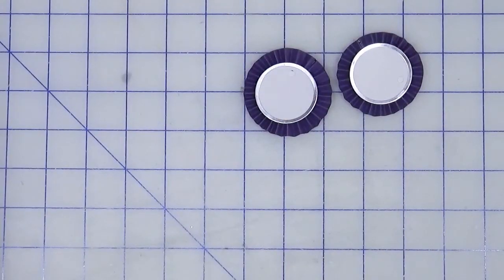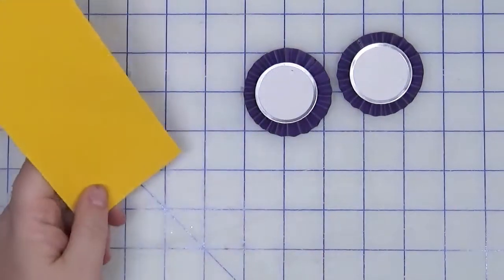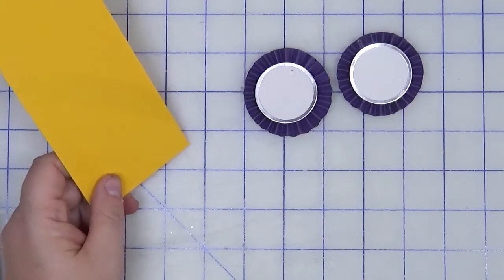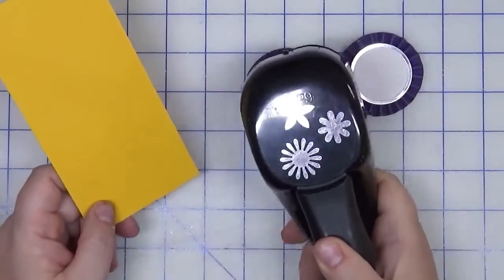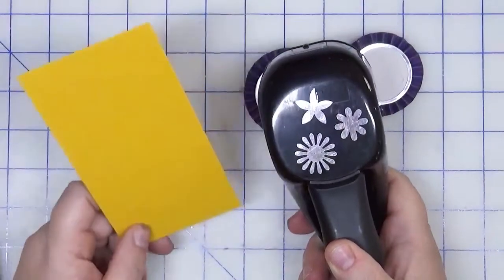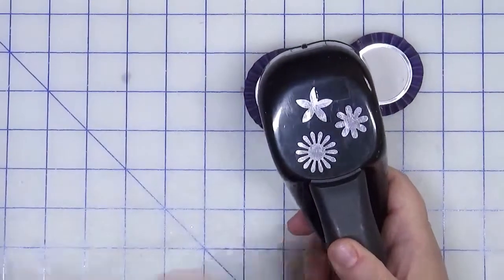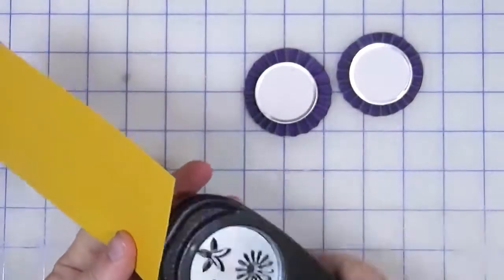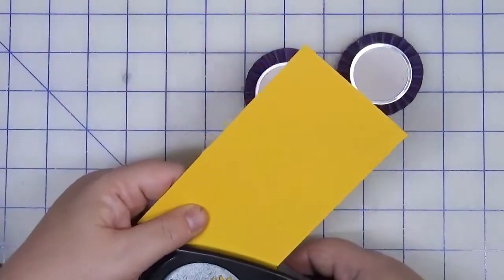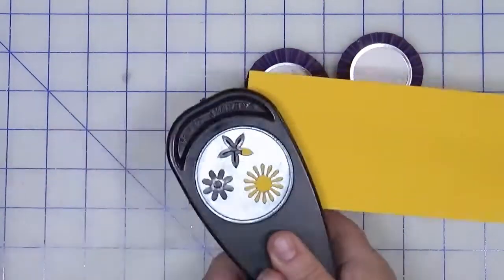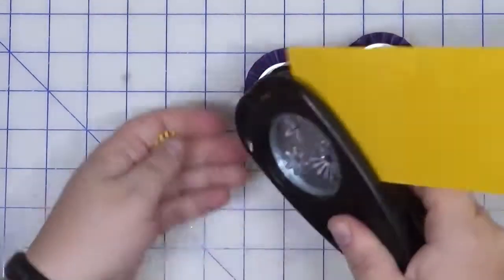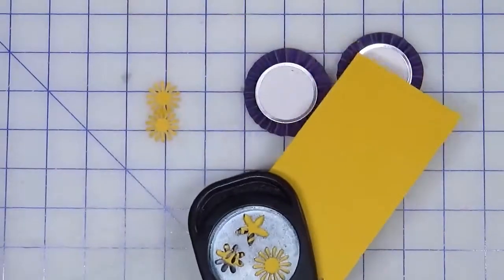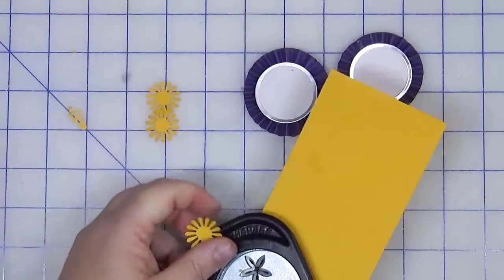From our scraps, we're going to take the small yellow scrap that we have and we are going to take the three petal punch, flower punch from Stampin' Up. Again if you've got something different, it would be whatever you're substituting this image out for. And we need to trim out four of these. Okay, so one, two, three.